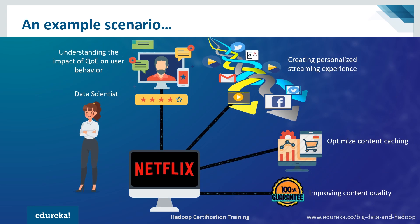Now let's see the role of a data scientist in the Netflix example — specifically how to optimize the Netflix streaming experience. First, understanding the impact of quality of experience on user behavior: user behavior refers to how a user interacts with the Netflix service, and data scientists use this data to understand and predict behavior. Predictions can be based on two factors: pre-buffer rate and bit rate. Rebuffer rate is how often playback is interrupted, and bit rate refers to the quality of the picture being served — a low bit rate means a fuzzy picture. Based on these predictions, quality of experience can be monitored.